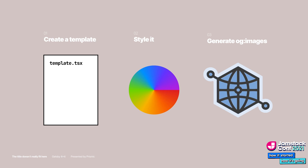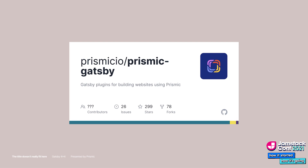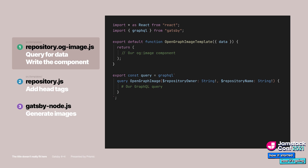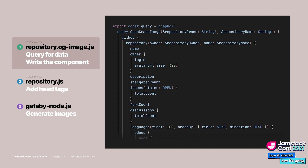Let's have a quick look at a demo — we'll rebuild the GitHub card, which you're probably already familiar with. First, we want to create our page template and set up the basic boilerplate: an empty component and an empty query. Then we'll work on the GraphQL query. In this project, we use Gatsby Source GraphQL to query the GitHub GraphQL API — querying repository information like the name, number of stars, languages, and so on.